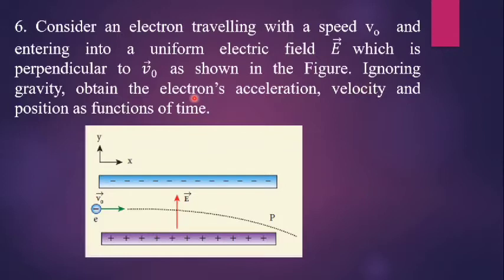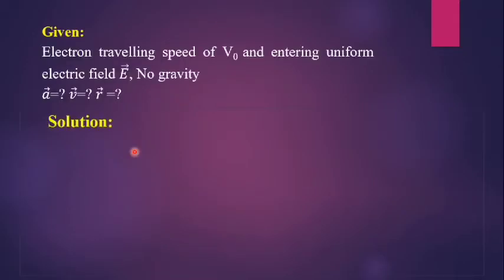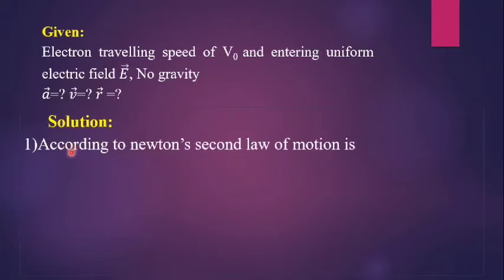Now we want to find the electron's acceleration, velocity, and position as a function of time. According to Newton's second law of motion, force is equal to ma, and acceleration a is equal to F divided by m.